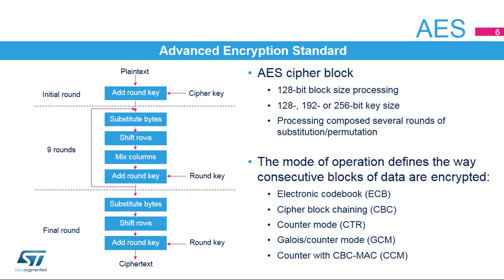Advanced Encryption Standard works on a block of 128 bits. Encryption or decryption can be done using a key of 128, 192, or 256 bits. A full block operation is composed of several rounds of substitution and permutation. The diagram shows the operations for an AES encryption using a 128-bit key. Successive blocks can be chained following several operating modes, described in the next slides.